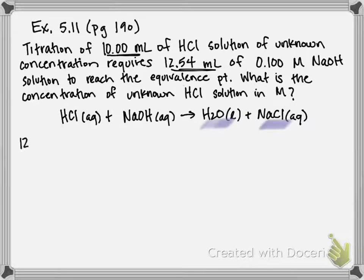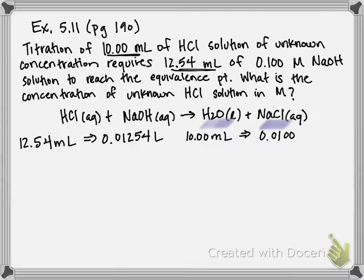So 12.54 mL, if we divide by 1,000 or move our decimal over three spots, it becomes 0.01254 L. And if we do the same for 10 milliliters, divide by 1,000 or move our decimal over three spots, we get 0.0100 liters.